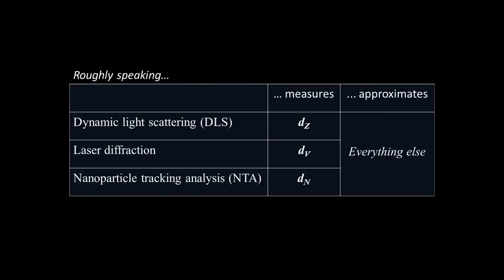Another way to think about it is that DLS directly measures dZ, and it calculates other averages based on that number plus some approximations. dV and dN calculated from DLS data should be considered as useful estimates for comparison, but potentially unreliable.